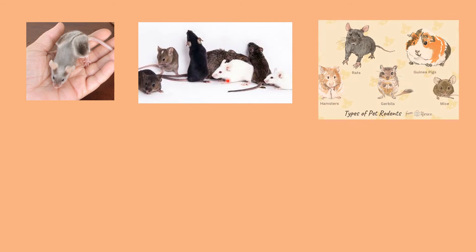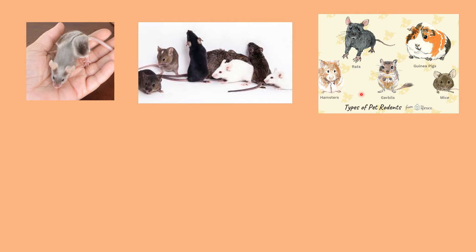Children, let us learn about this animal called a mouse. A mouse is a very small animal. They come in different colors: light brown, dark brown, gray, white, and even black. There are different types of mice. These mice are kept as pets — people keep them as their pets. As I told you earlier, they are also called rodents.